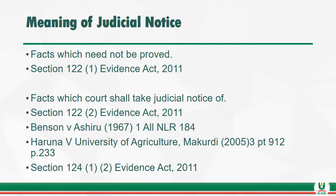Subsection 1 of section 122 provides as follows: no facts of which the court shall take judicial notice under this section need to be proved. Subsection 2 of section 122 provides matters for which the court ought to take judicial notice, including laws and enactments, subsidiary legislation made under those laws, and public acts and laws passed by the National Assembly or a State Assembly, and subsidiary legislations.